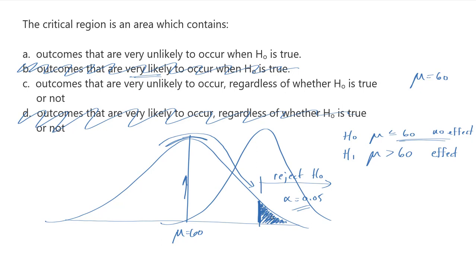These would actually be likely. We would expect to see, if there's an increasing effect, if the treatment does increase scores, we would expect to see more larger scores. So it's important that they say here when the null is true.